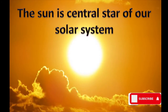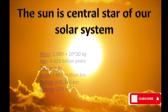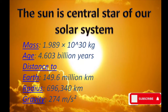The Sun is the central star of our solar system. The mass of the Sun is about 1.989 × 10^30 kg. Its estimated age is about 4.6 billion years, and its gravity is about 274 meters per second squared.